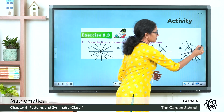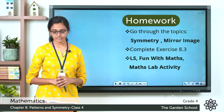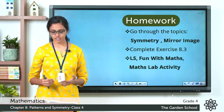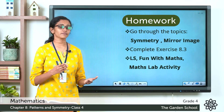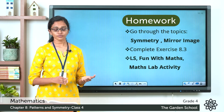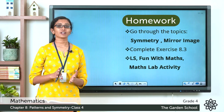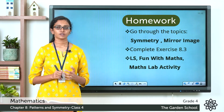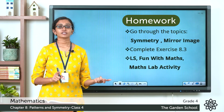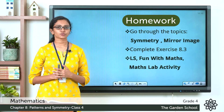You can go through the topic of symmetry and mirror image on pages 120 and 121 of your textbook. Go through the topics once, and then you have to complete Exercise 8.3. The first question we have already done in class. You have to complete the second question, which is to draw the mirror images of the figures given there. If a line appears to be going towards the left, the reflection will make it appear as if it is going towards the right. You can do this in your textbook itself.